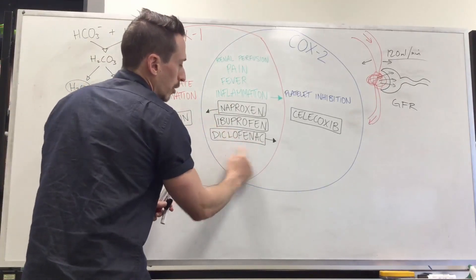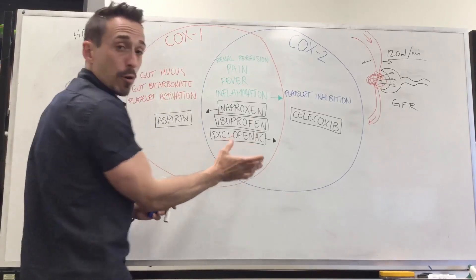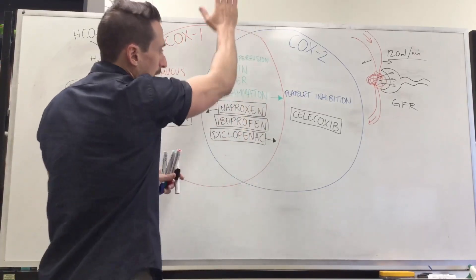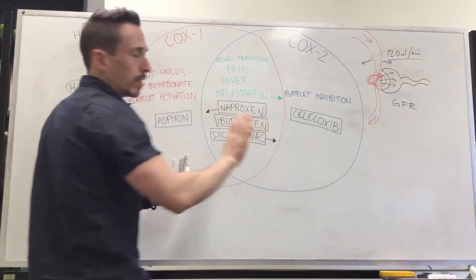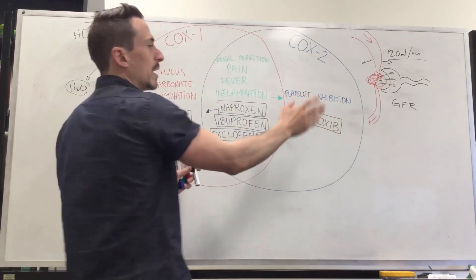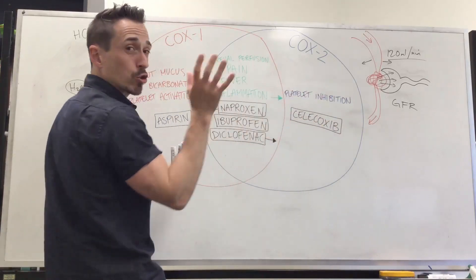And then diclofenac is basically Voltaren, and as you can see, inhibits both COX-1 and COX-2. However, pushes more over to the COX-2 role, which means, as we look at COX-2, if you take a COX-2 inhibiting drug, what it's going to do is it inhibits platelet inhibition.